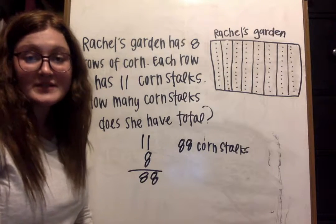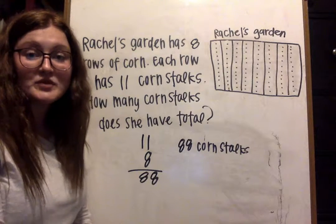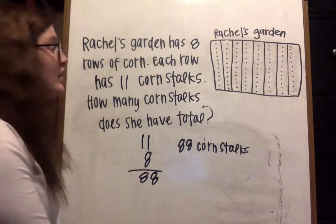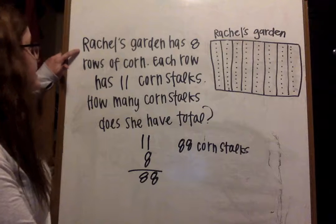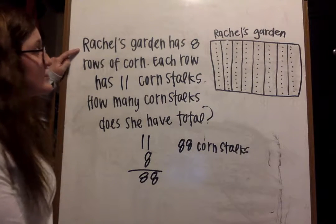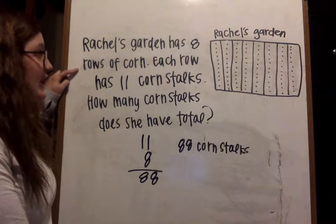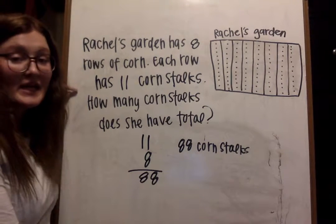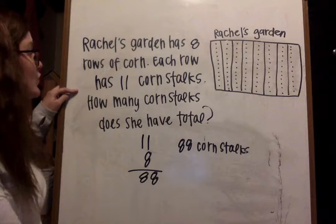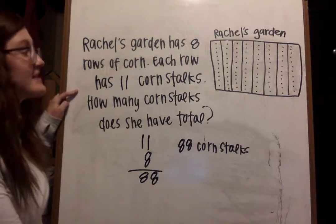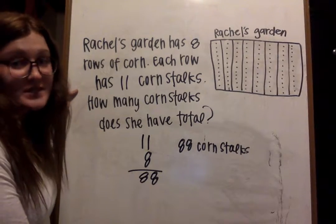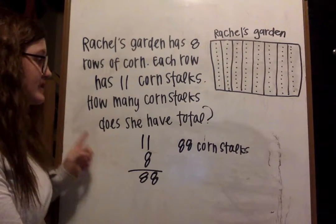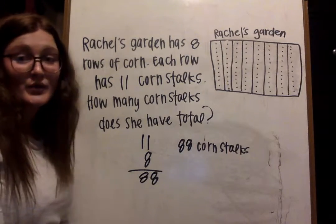Let's do another example of a multiplication word problem. Our question says: Rachel's garden has eight rows of corn. Each row has 11 corn stalks. How many corn stalks does she have total?